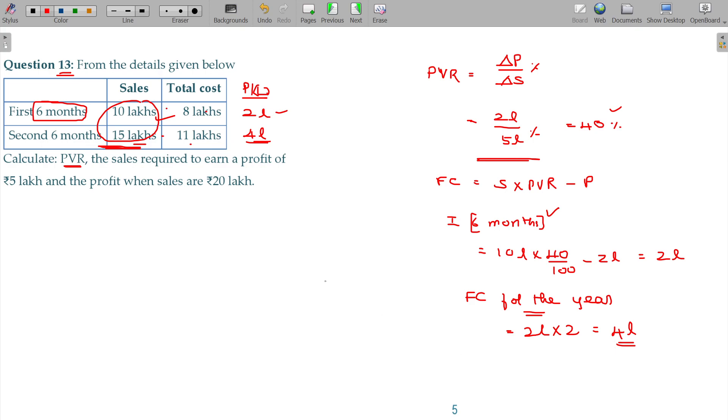Next question: sales required to earn a profit of 5 lakhs. Formula is fixed cost plus desired profit, divided by PVR.